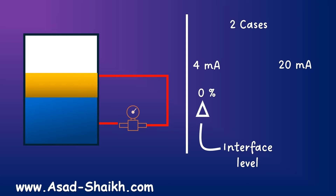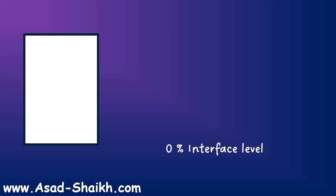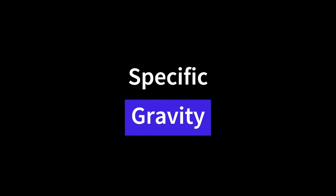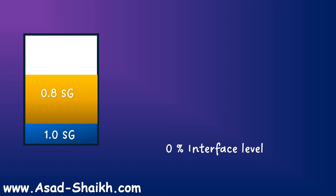The first thing is we will understand the interface level at 0% and pair it up with 4 mA. Then we will find what the interface level is going to be at 100% and pair that up with 20 mA. So the transmitter output is paired with the least and the maximum case. The heavier fluid is going to come at the bottom — let us imagine that to be water, which has a specific gravity of 1. And then you have the lighter fluid, which is going to be light crude oil, with a specific gravity of around 0.8.